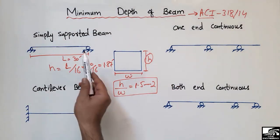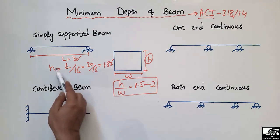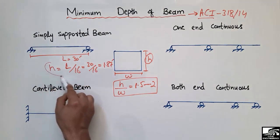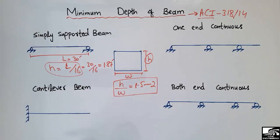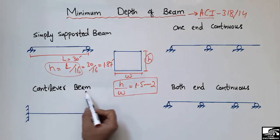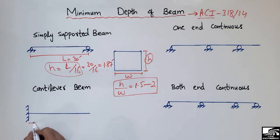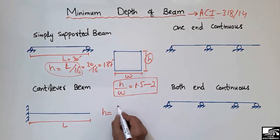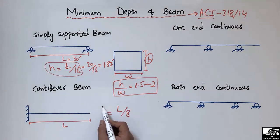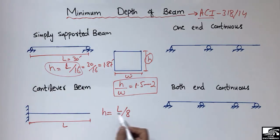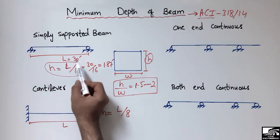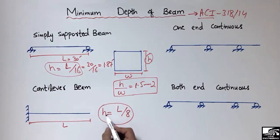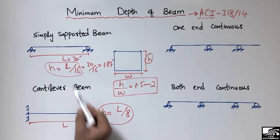So the requirement for a simply supported beam is that its minimum depth should not be less than L/16. For a cantilever beam, the minimum depth or thickness of the beam should not be less than L/8. The depth required for a cantilever is therefore greater than that for a simply supported beam of the same length.